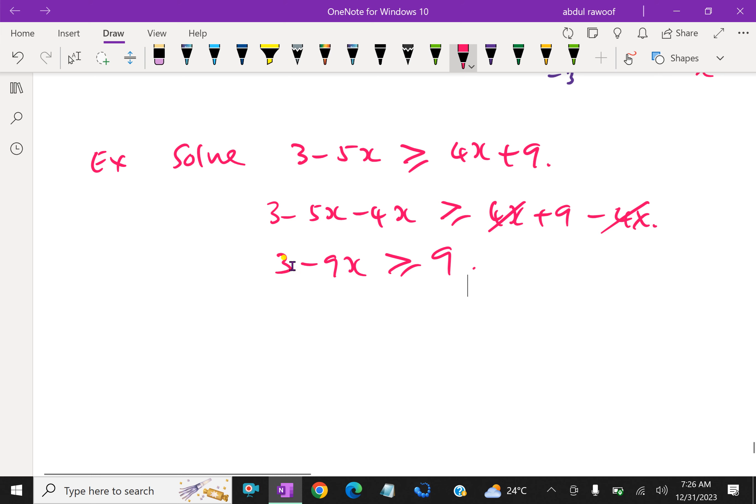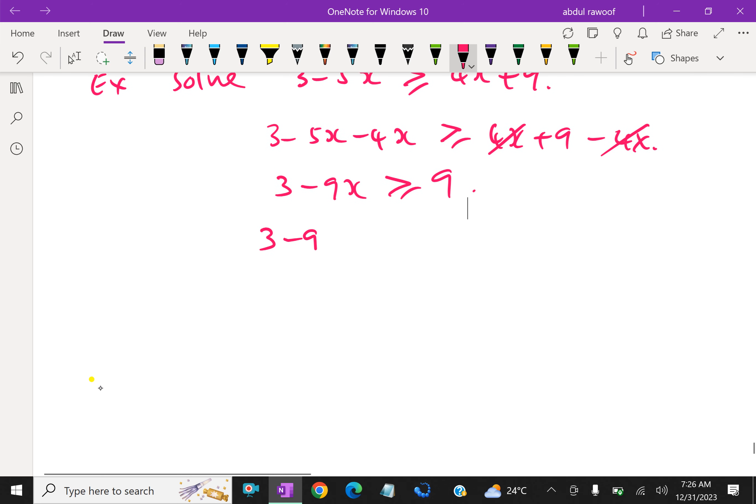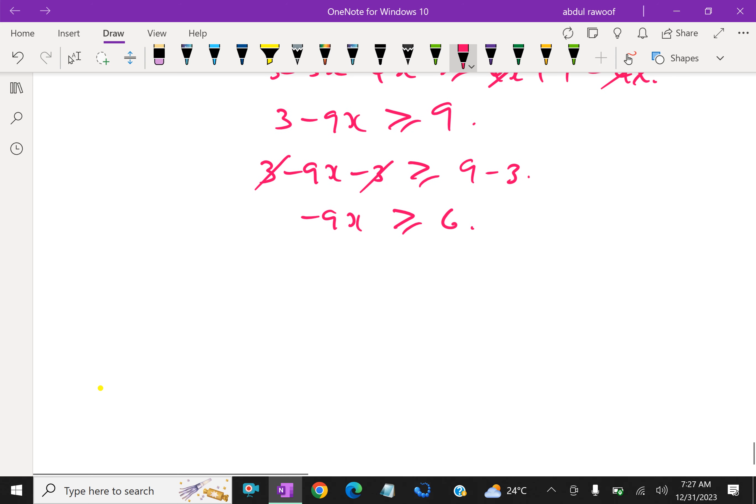Now subtracting 3 from both sides to get rid of this 3 on the left side. That is 3 minus 9x minus 3, 9 minus 3, which gives minus 9x greater than or equal to 6. Here note this point, we have to divide by the negative number minus 9 on both sides. So minus 9x over minus 9.